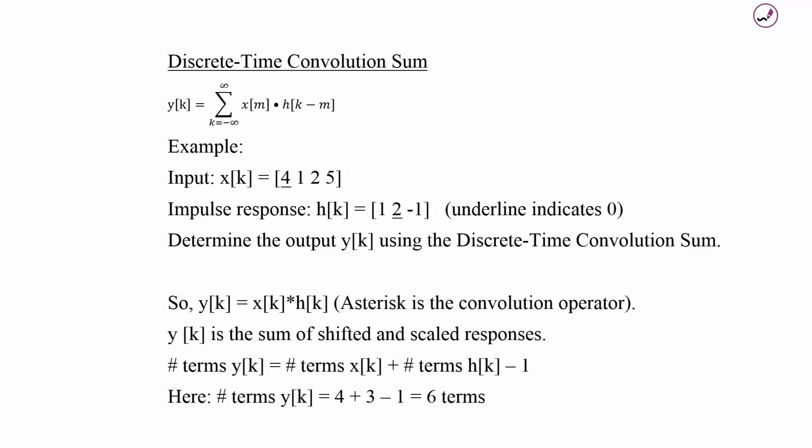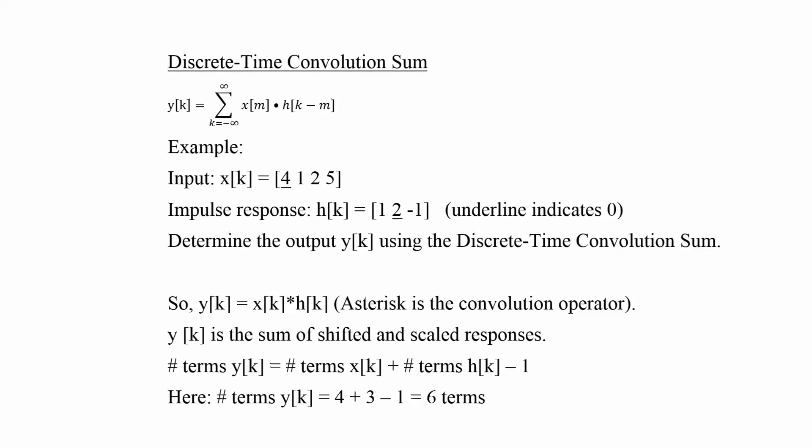Our goal is to determine the output y of k using the discrete time convolution sum. So basically, we're going to be adding up some shifted and scaled impulse responses with x of k. A way to check ourselves as we're going through this, because at the end, we should end up with the number of terms of y of k equals number of terms of x of k plus number of terms of h of k minus 1 for our output, giving us a total of 6 terms, because we have 4, 3, and then minus 1.